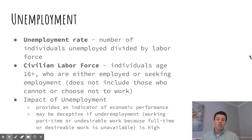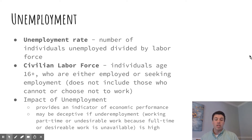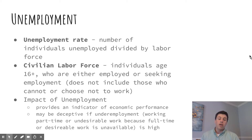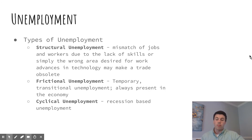That's an interesting and kind of misunderstood part of the system — and also a flaw — because it can give a deceptive number if there's a large number of people not part of the labor force who should be. Another flaw is that it does not account for underemployment. So if you're working a part-time job but want full-time work that's unavailable, you still show up as completely employed, and that's a negative if it's happening in large numbers.